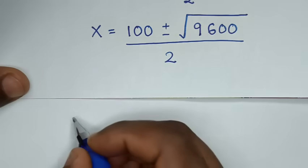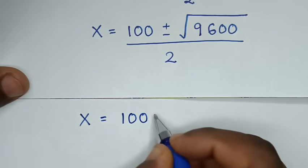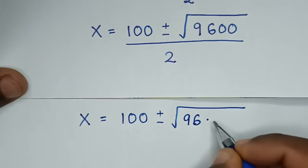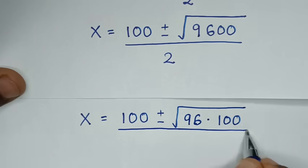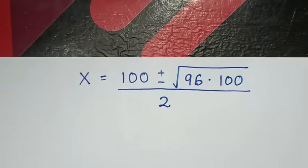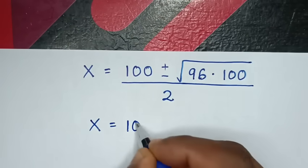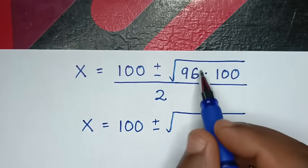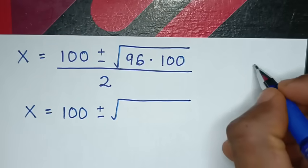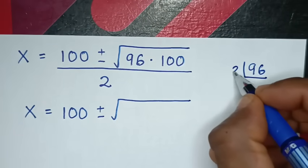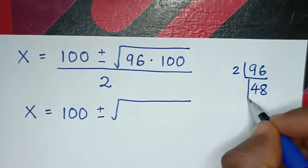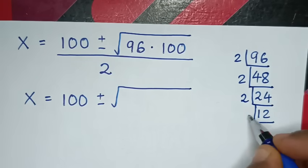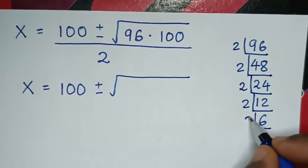In the next step, it will be x is equal to 100 plus or minus square root of 96 times 100. Let's find the prime factors of 96 to simplify the square root. 96 divided by 2 is 48, divided by 2 is 24, divided by 2 is 12, divided by 2 is 6, divided by 2 is 3, divided by 3 is 1.